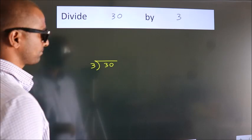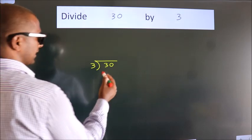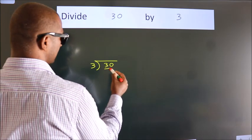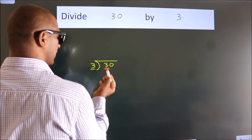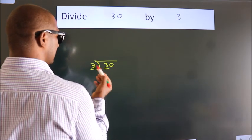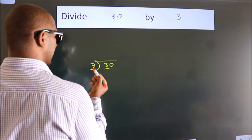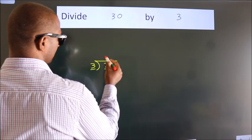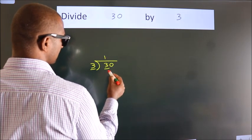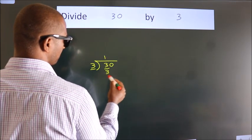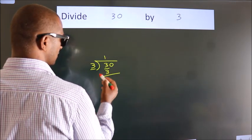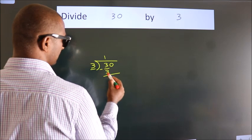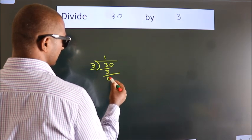Next, here we have 3, and here 3. When do we get 3? In the 3 times table: 3 once is 3. Now we should subtract, and we get 0.